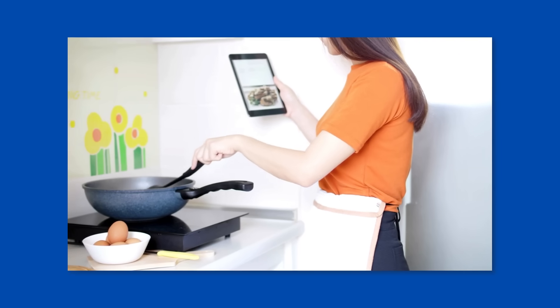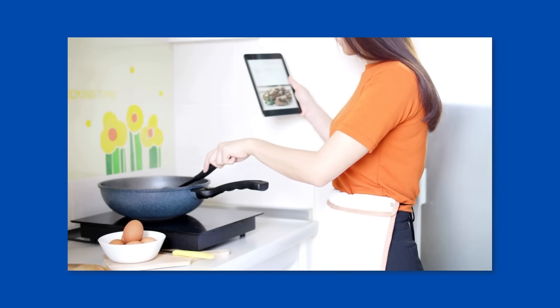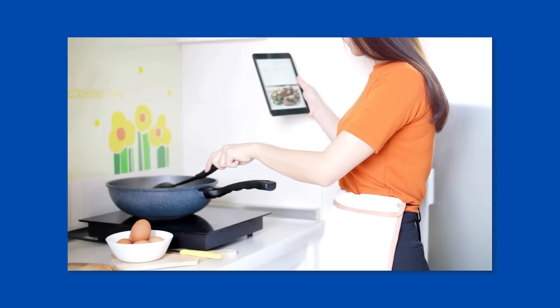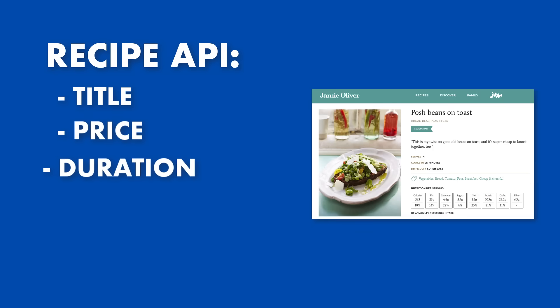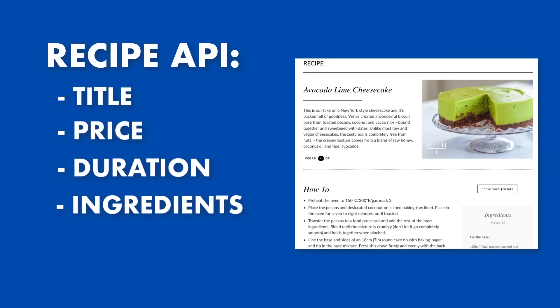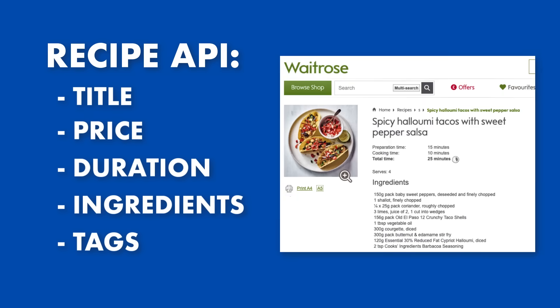Think of it as a virtual recipe box — a way to organize your favorite recipes by title, price, cooking duration, ingredients, tags, and images.